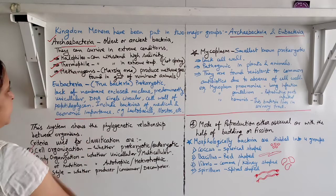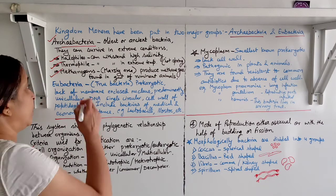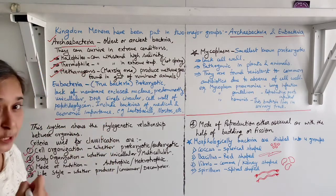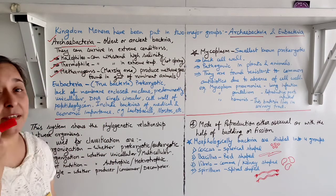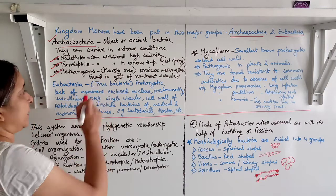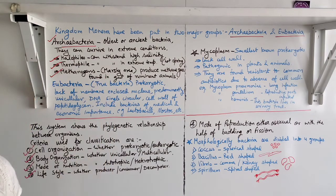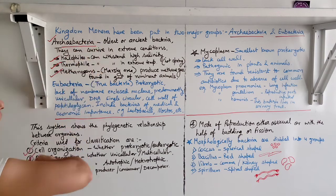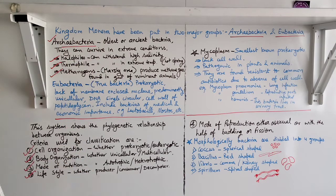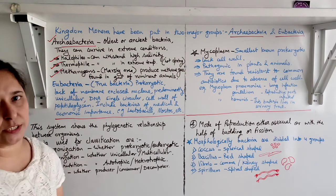Methanogens grow in marshy areas and produce methane gas. They are usually found in the gut of ruminant animals. This is all about Archaebacteria, the oldest or ancient bacteria.